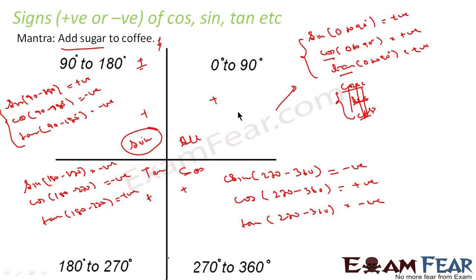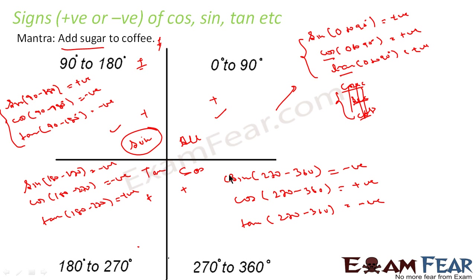To summarize: any value of sine, cos, or tan from 0° to 90° is positive. From 90° to 180°, only sine is positive — cos and tan are negative. From 180° to 270°, tan is positive — sine and cos are negative. From 270° to 360°, only cos is positive.